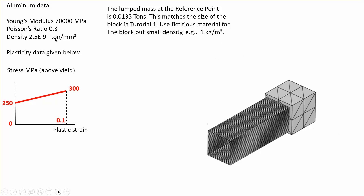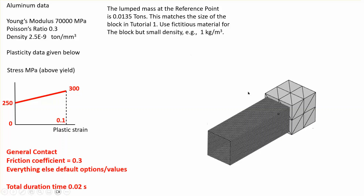The aluminum data is given in tutorial one: Young's modulus 70,000 MPa, Poisson's ratio 0.3, yield strength 250 MPa at plastic strain of 0, and stress of 300 MPa at plastic strain of 0.1. I'm going to use general contact with a friction coefficient of 0.3, everything else default, and the total duration is 20 milliseconds or 0.02 seconds.